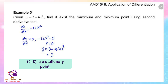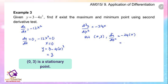Find the second order derivative to test the point: d²y/dx² equals negative 24x. At (0, 3), the value of the second order derivative is 0. If the value is 0, the test fails, so we have to proceed with the first order derivative test.